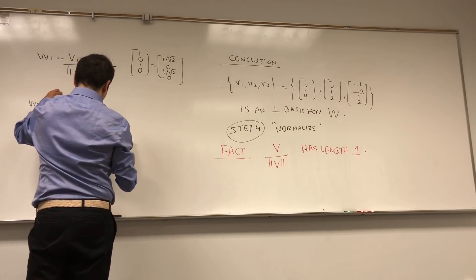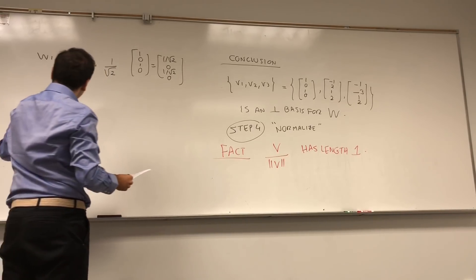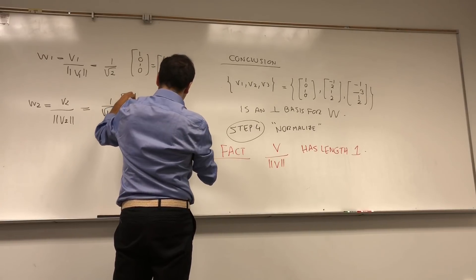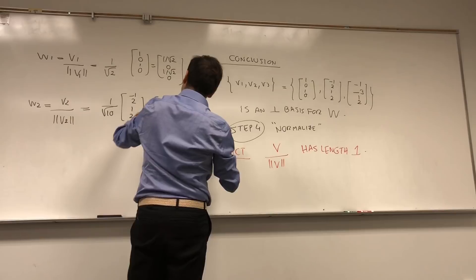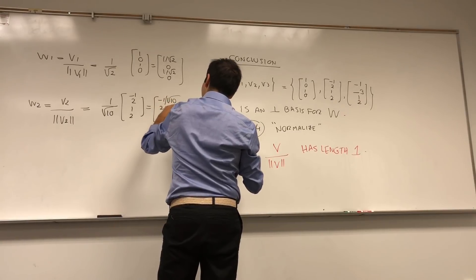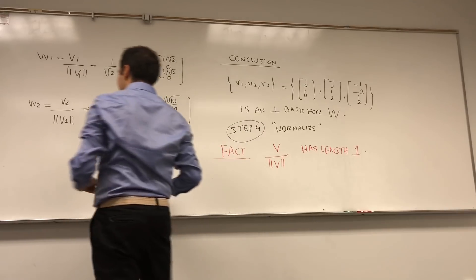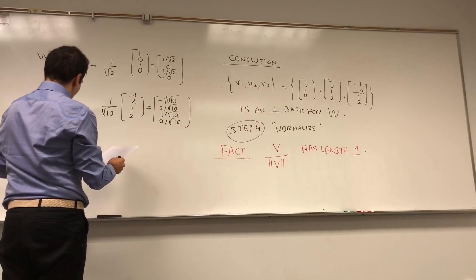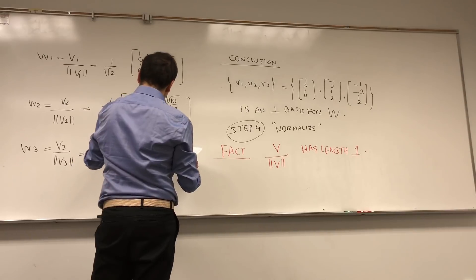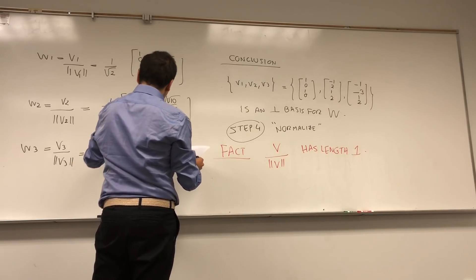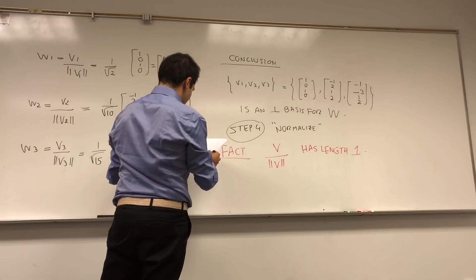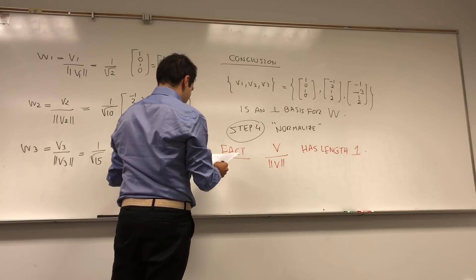And then W2, which is V2 over length of V2, which is 1 over root 10 times minus 1, 2, 1, 2, which is minus 1 over root 10, 2 over root 10, 1 over root 10, and 2 over root 10. And lastly, W3, which is V3 over length of V3, and it's 1 over root 15 of this vector minus 1, minus 3, 1, 2, which is minus 1 over root 15, minus 3 over root 15, 1 over root 15, and 2 over root 15.